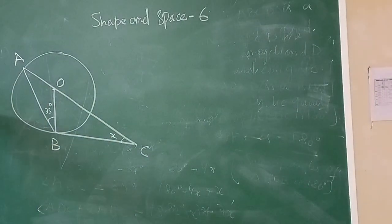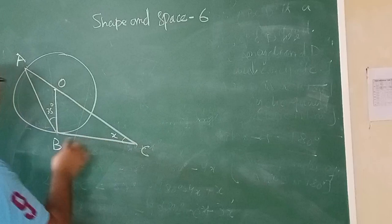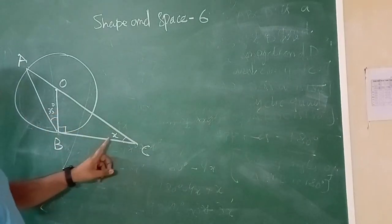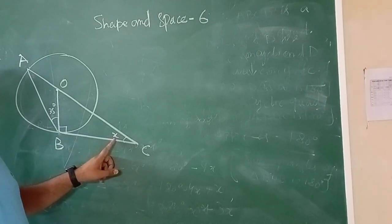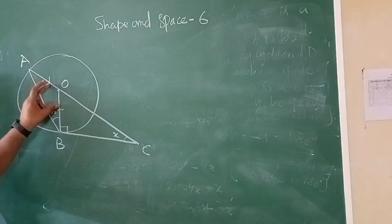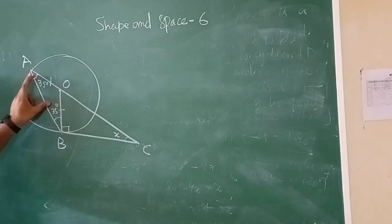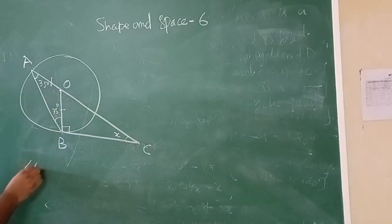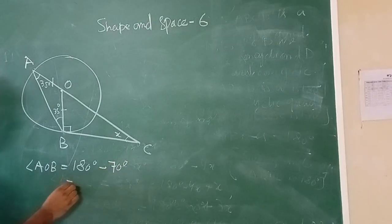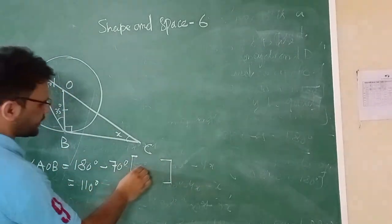Now we solve question 11. A and B are points on the circumference of a circle, and BC is the tangent, meaning the angle between radius OB and BC is 90 degrees. We need to find angle C, the value of x. From triangle AOB, OB and OA are equal radii, so it is isosceles. This angle equals 35 degrees. Angle AOB equals 180 minus (35 plus 35) equals 110 degrees, by the sum of angles of triangle AOB.